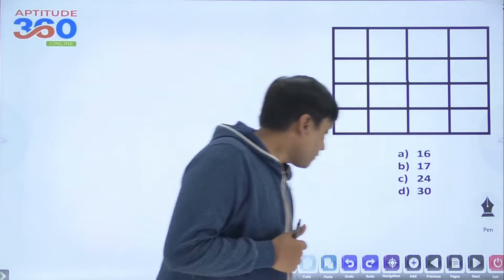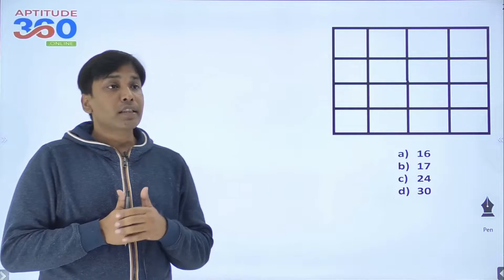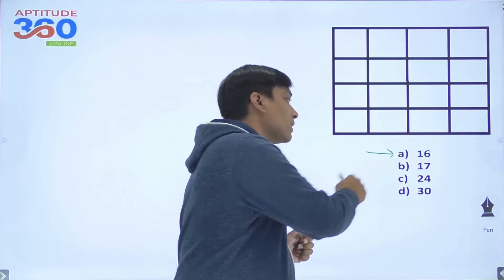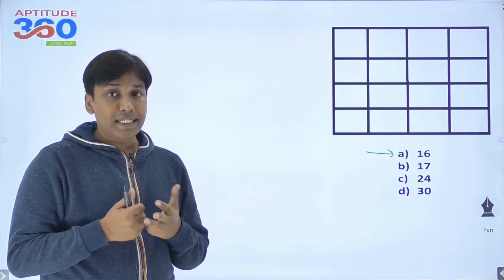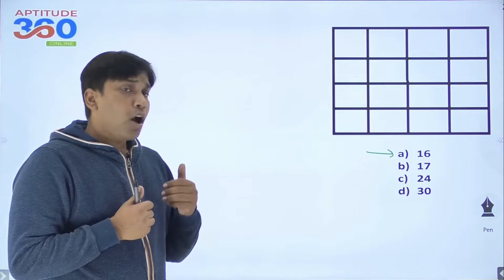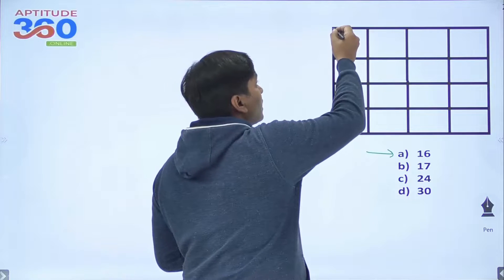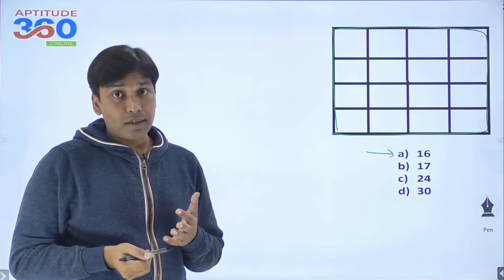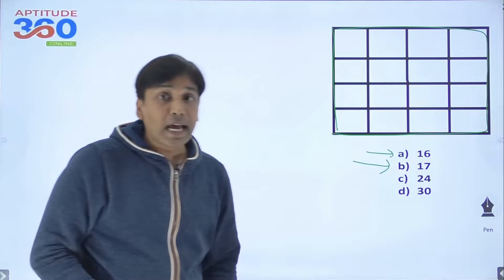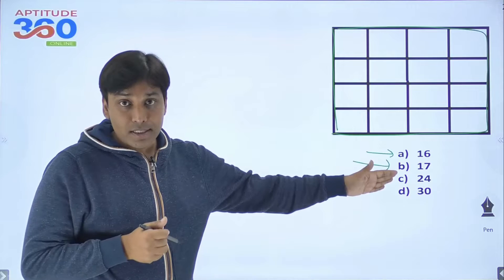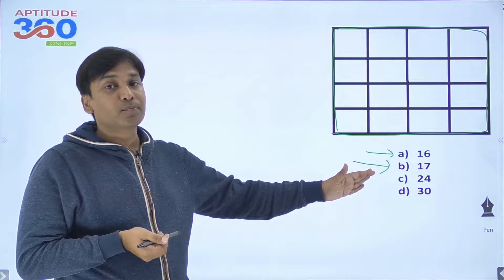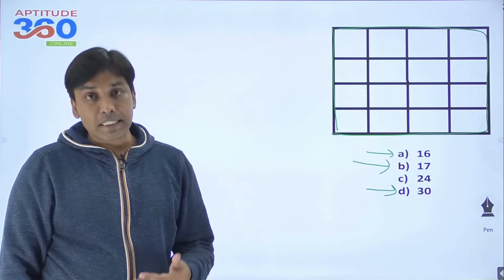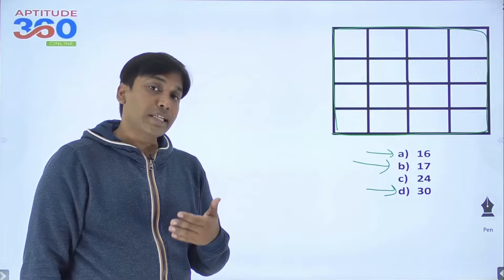My first question is this: how many squares do we see? The very first option is 16, and most people will say 16 is the right answer. But is 16 the right answer? Watch this very carefully. How about this — isn't it a square? So people realize the answer is not 16, and say it must be 17. But 17 is also a wrong answer. The right answer is 30. Let us find out how and why 30 is the right answer.